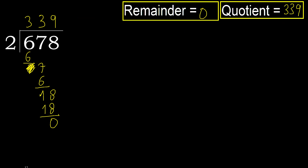OK, here 0 — therefore 678 divided by 2 is here: 339.